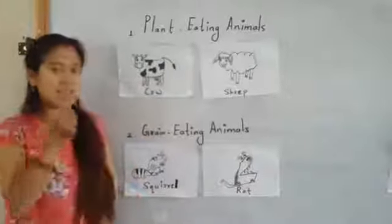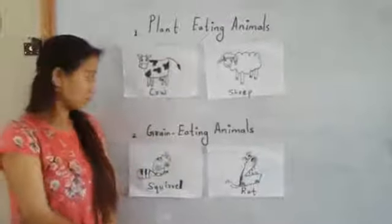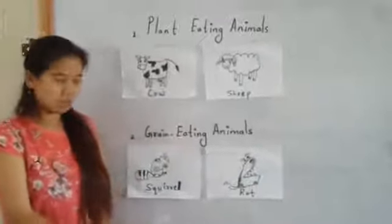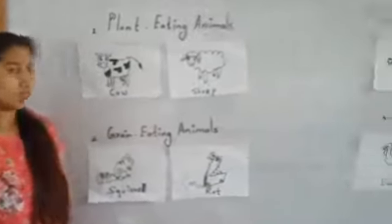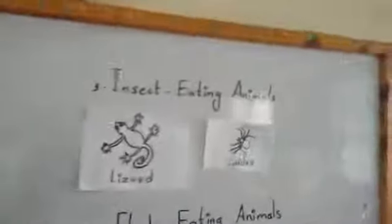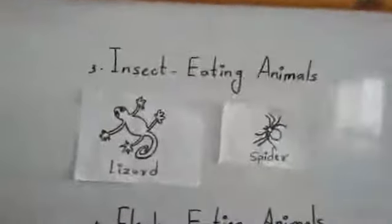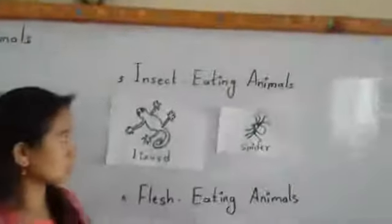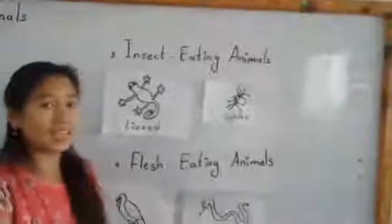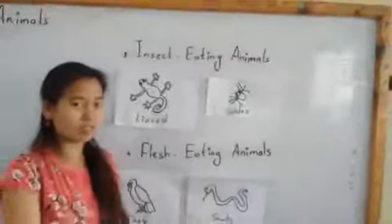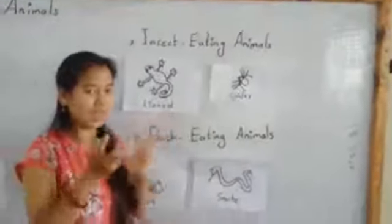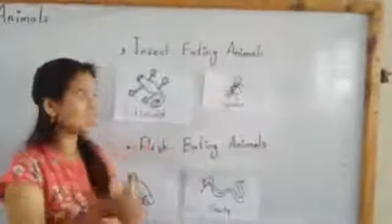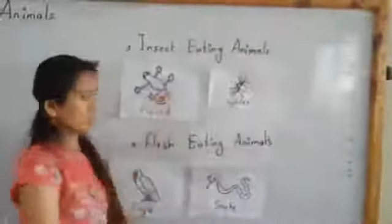Third, insect eating animals. Some animals eat only insects, so they are called insect eating animals.